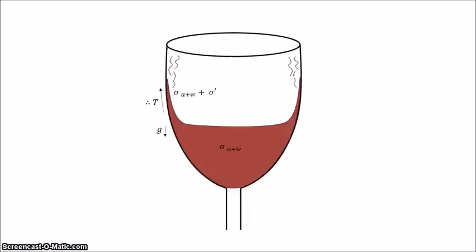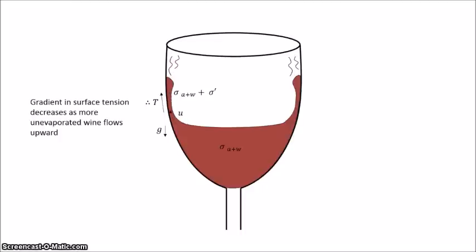This stress is opposed by gravity, pulling the liquid in the film downwards. Viscosity also counteracts the flow, but it is not considered in this example. Because the stress due to the surface tension gradient is greater than gravity at the beginning, the fluid will begin moving up the glass. Surface tension acts to accumulate liquid near the top of the thin film. The accumulated fluid will contain more alcohol that hasn't had a chance to evaporate yet, which reduces the surface tension gradient and thus the resulting stress.